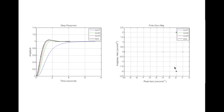System 1 is the original poles plus this pole. System 2 is the original poles plus this pole. System 3 is the original poles and this pole. The corresponding step responses are shown here.